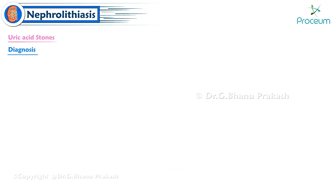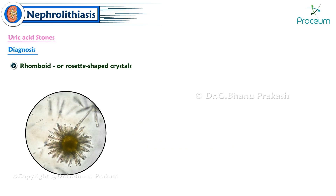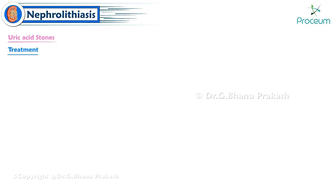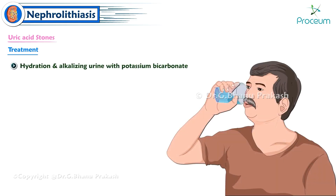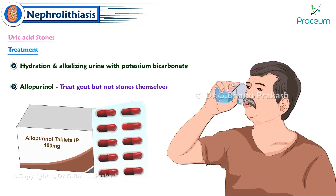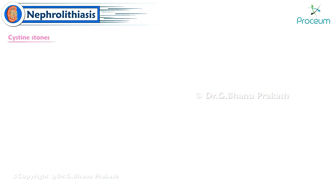Rhomboid or rosette-shaped uric acid crystals are often seen in patients with uric acid nephrolithiasis. Uric acid stones are radiolucent on X-ray. Treatment is focused on hydration and alkalizing the urine with potassium bicarbonate. Allopurinol can be used to treat gout but not the stones themselves.